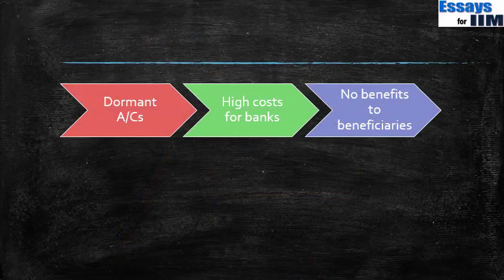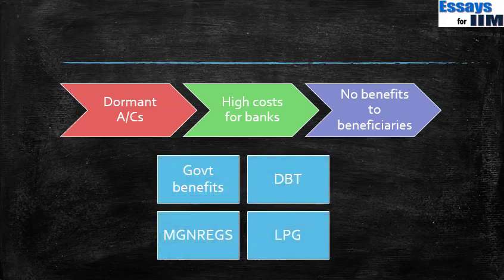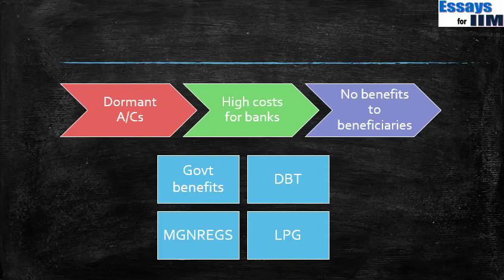This is not the first time a bank account scheme has been launched. What used to happen was that accounts opened under earlier financial inclusion schemes remained dormant, leading to high costs for banks and no benefits to beneficiaries — practically zero or very low balance accounts that benefited nobody. This time, the government is changing that by channelizing all government benefits through these accounts. Direct benefit transfer schemes, payments of MGNREGS, and LPG subsidies will be routed through these Jan Dhan accounts, ensuring there is always money in circulation so they do not become dormant.